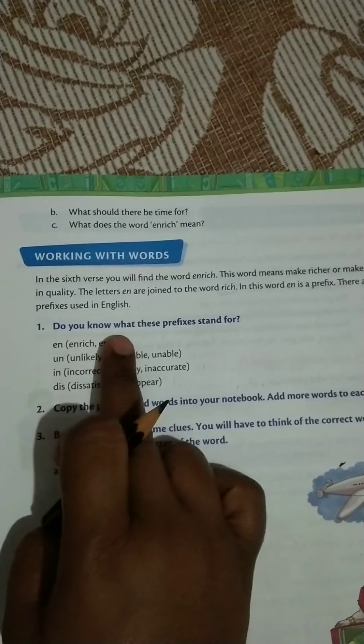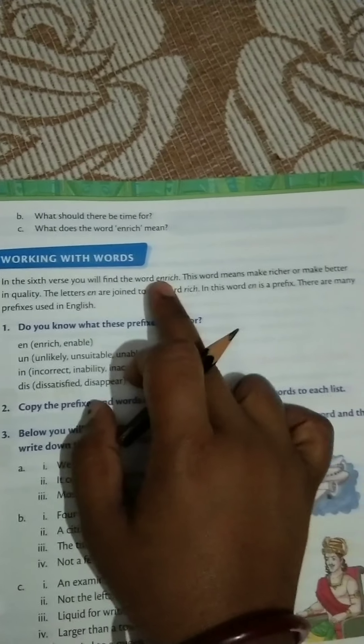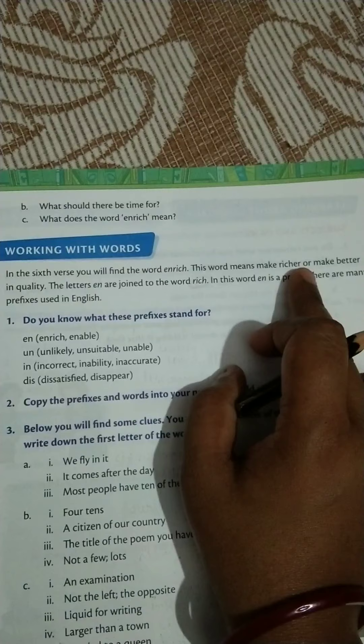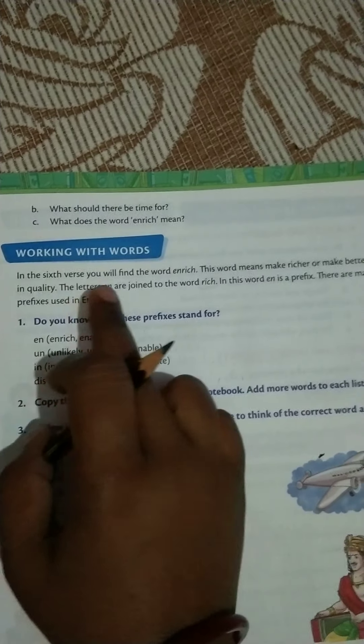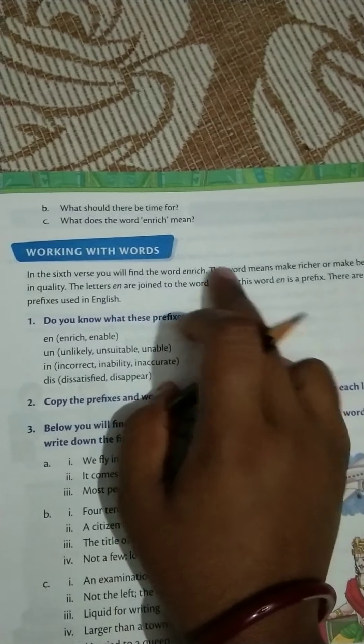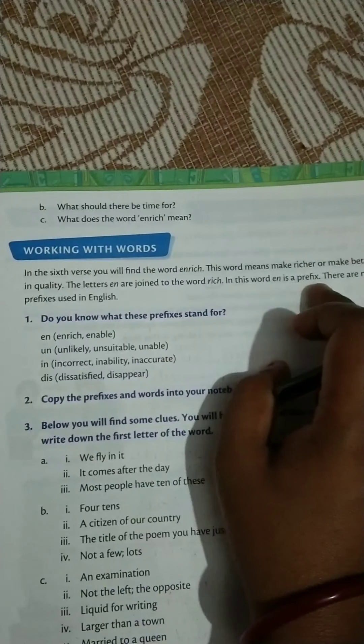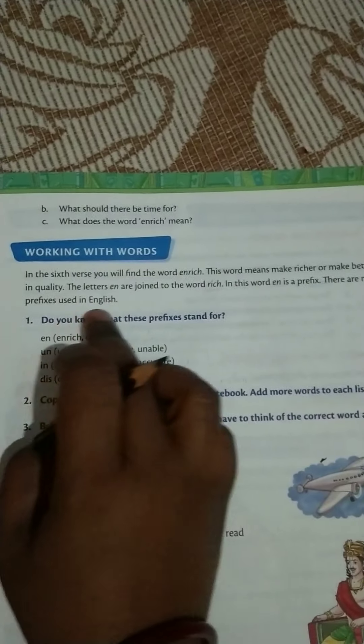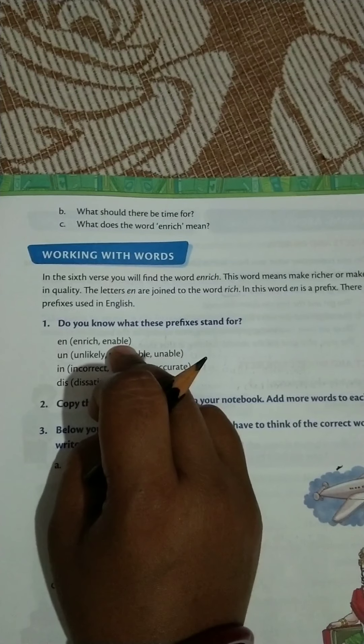First is given: do you know what these prefixes stand for? First I am going to discuss about the prefix. For example, enrich is the word. In this it means to make richer or better in quality. So the letter 'en' is joined to the word 'rich'. In this word, 'en' is a prefix. There are many prefixes used in English, like 'en' is used in enrich and enable. Like this I am going to tell you other many words.